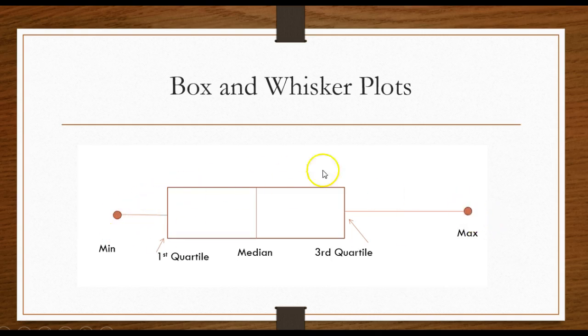We've got our minimum and our maximum values of the data. That's simply the smallest data point and the largest. Then we've got our box. The left side of the box is at the first quartile. The right side of the box is at the third quartile. Remember the first quartile is the same as the 25th percentile and the third quartile is the same as the 75th percentile.